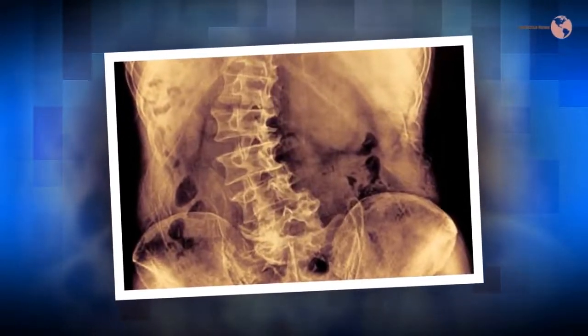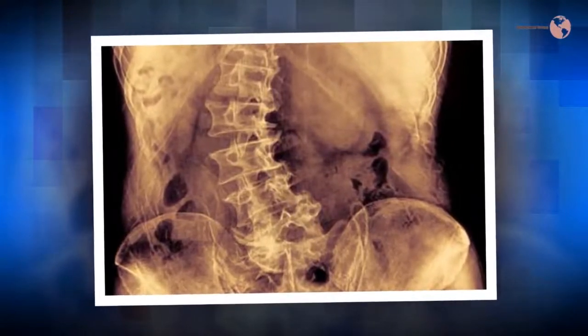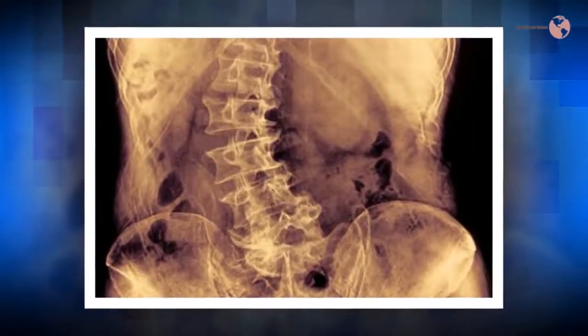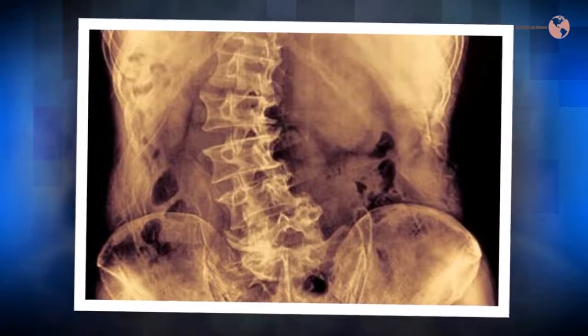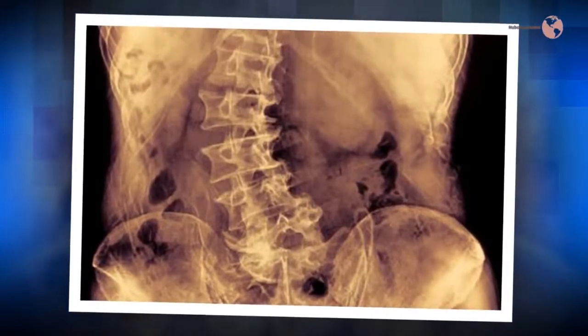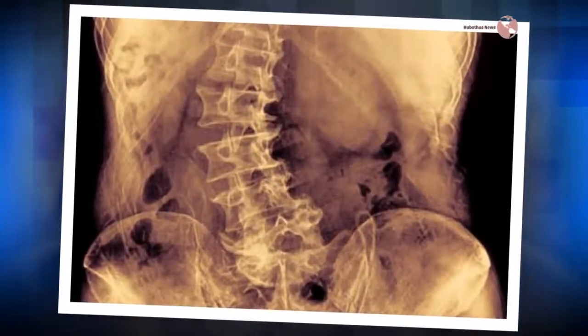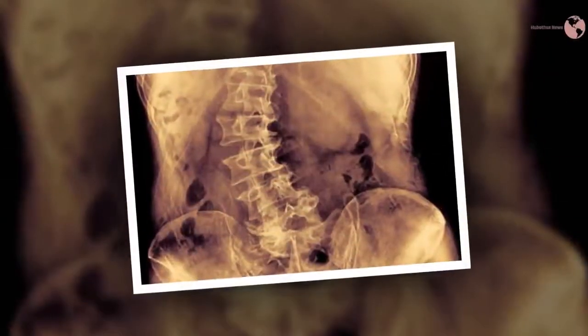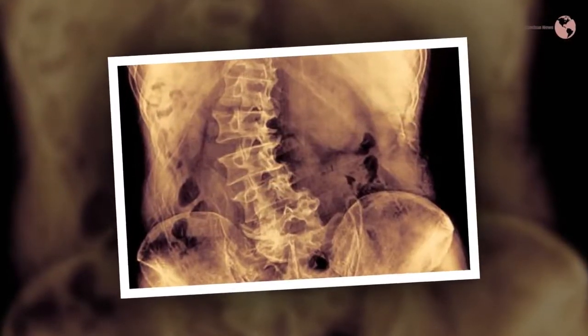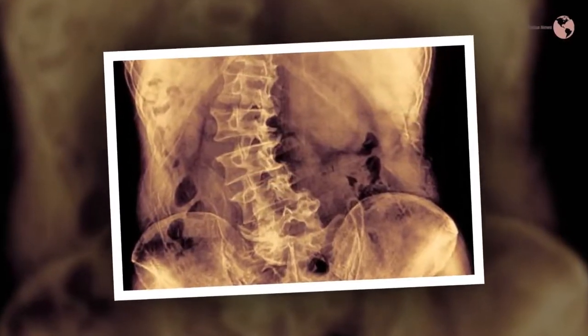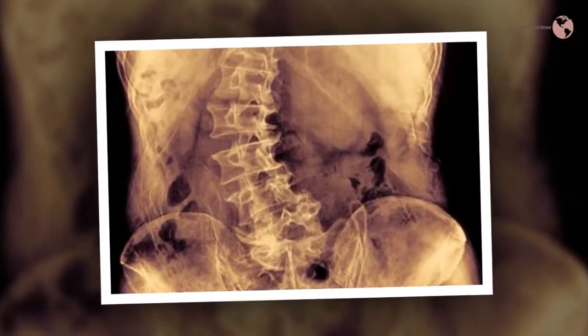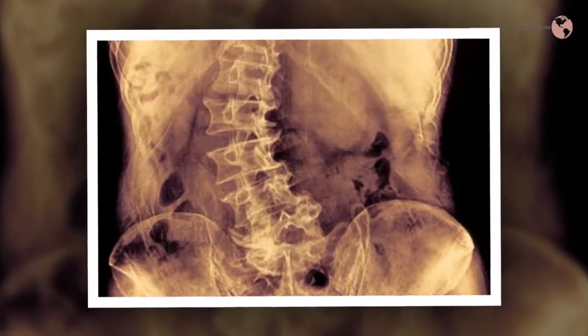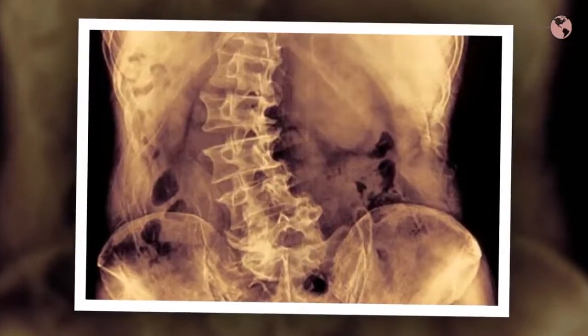From a side view, the spine typically curves to some extent at the neck and lower back, forming a wide S-shape. But from the back and front view, the spine usually appears mostly straight. In people with levoscoliosis, from the back view, the spine appears to take on a hard C or S-shape, leaning to the left.